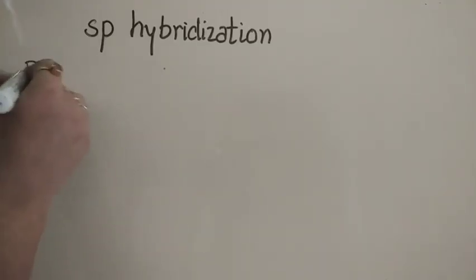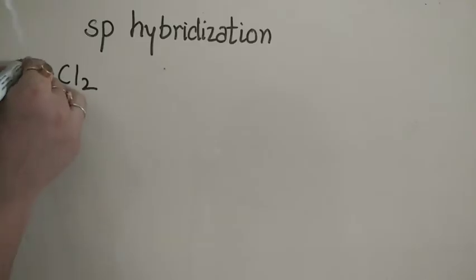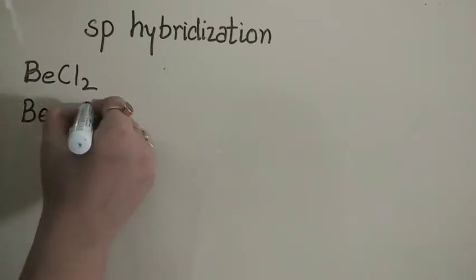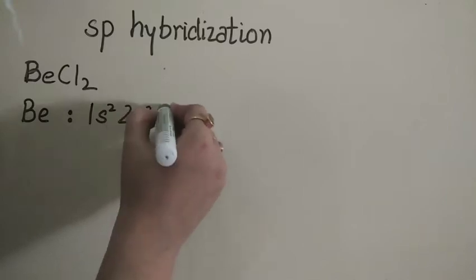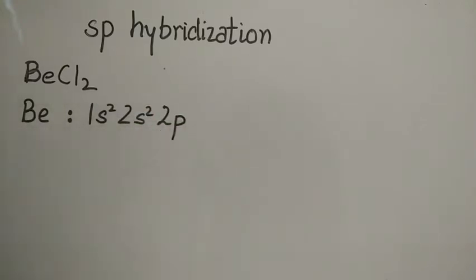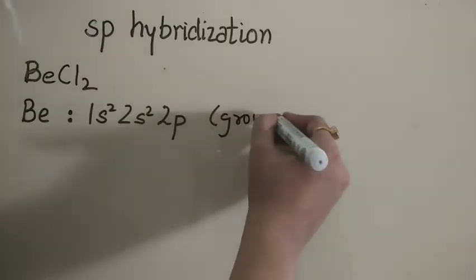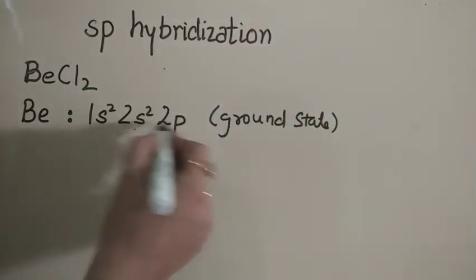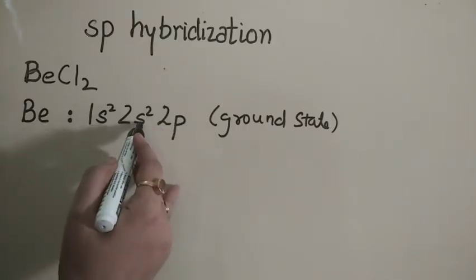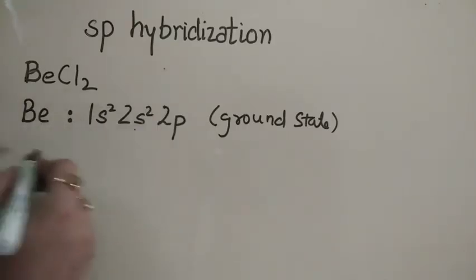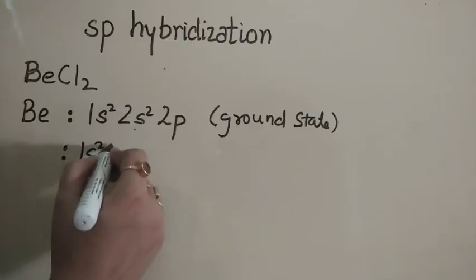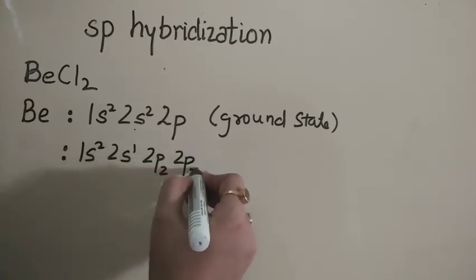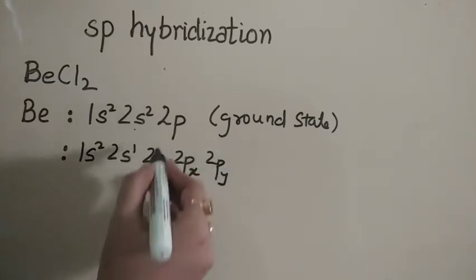The example here is BeCl₂, which shows sp hybridization. Beryllium has atomic number 4, so its electronic configuration is 1s2, 2s2, and the 2p orbitals are empty. This is the ground state. For hybridization, first write the ground state electronic configuration. These two orbitals — 2s and 2p — are involved in hybridization, so one electron jumps from the s orbital to the p orbital. In the excited state, the configuration becomes 1s2, 2s1, 2pz1, with 2px and 2py remaining empty.